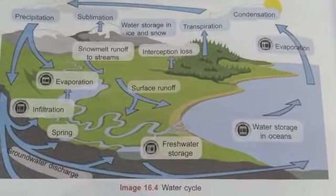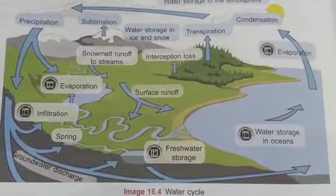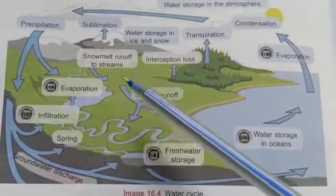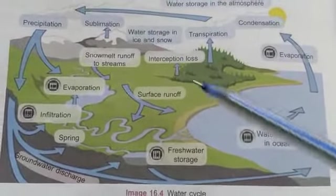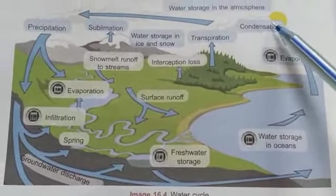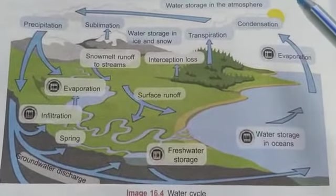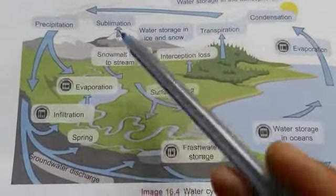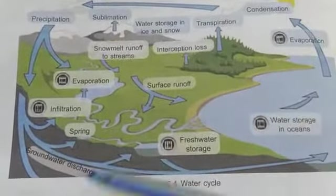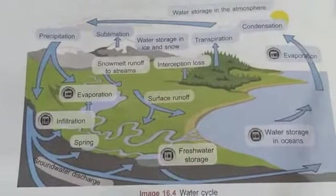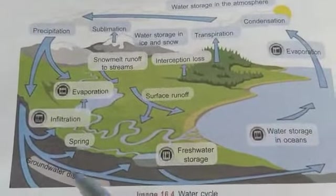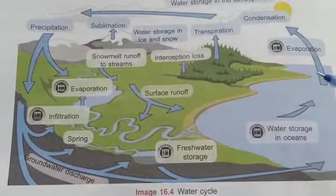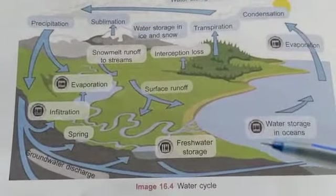All water bodies — rivers, lakes, oceans, surface water — undergo evaporation. Even the human body loses some water. Plants lose water through transpiration, and polar caps and glaciers lose water through sublimation. All this water goes to the atmosphere, cools down through condensation, and returns via precipitation. This continuous movement is called the water cycle.